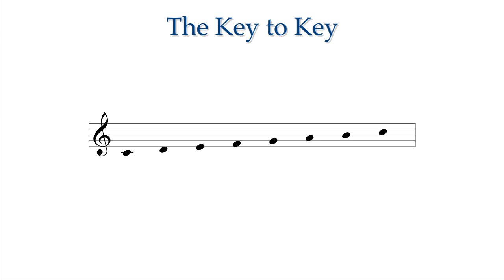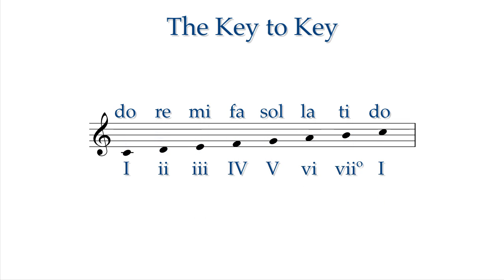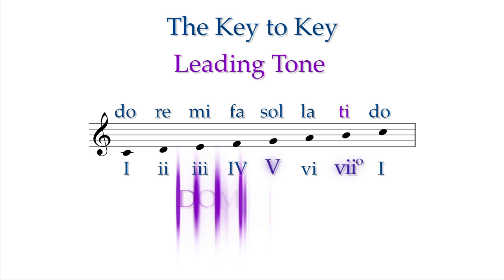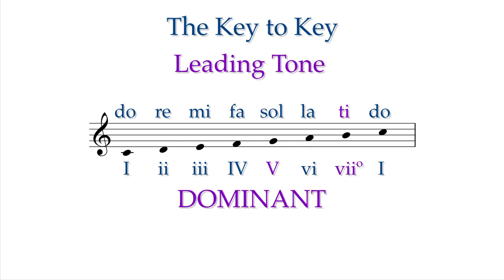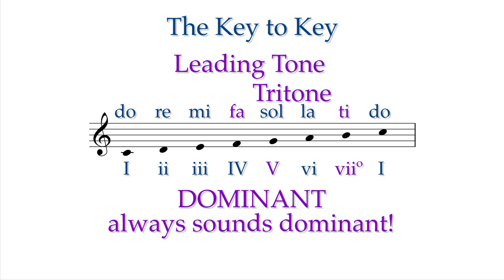Remember, in tonal music you are always in a key of seven notes, seven functions. The most important of these notes is the leading tone, and the most important of these functions is the dominant. The most important interval is the tritone, found in between Ti and Fa. These relationships define which note is heard as tonic. This also means that to a listener raised in a tonal culture, a dominant seventh chord always sounds like a dominant seventh chord. If you remember and rely on these facts, the world of chromaticism is much easier to navigate.